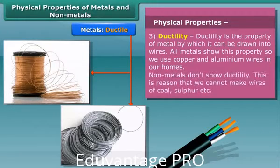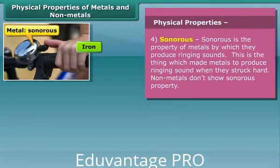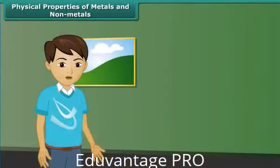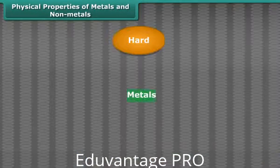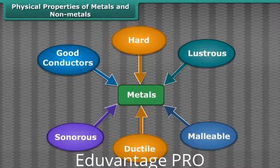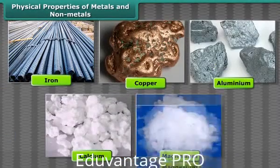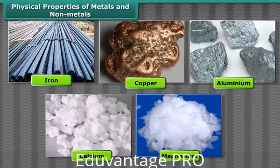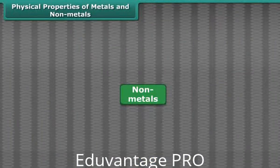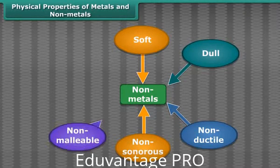Non-metals don't show ductility. Now let's talk about another property of metals — that is sonority. Metals produce ringing sounds when struck, so they are said to be sonorous. By these properties we can say that metals are hard, lustrous, malleable, ductile, sonorous, and good conductors of heat and electricity. Iron, copper, aluminium, calcium, magnesium, etc. are examples of metals. Non-metals like coal and sulfur are soft, dull, non-ductile, non-sonorous, non-malleable, and poor conductors of heat and electricity.